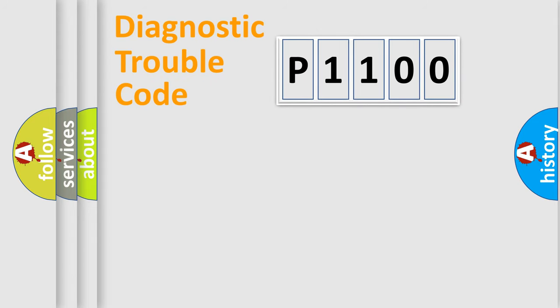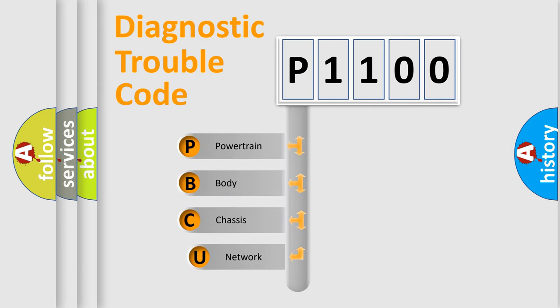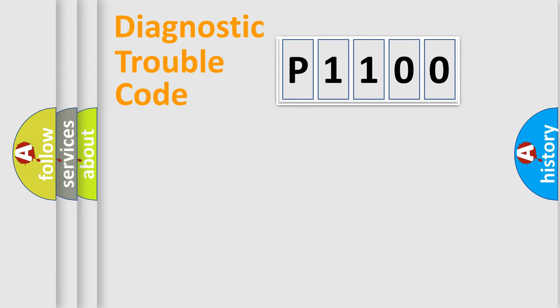First, let's look at the history of diagnostic fault code composition according to the OBD2 protocol, which is unified for all automakers since 2000. We divide the electric system of an automobile into four basic units: Powertrain, Body, Chassis, and Network. This distribution is defined in the first character of the code.